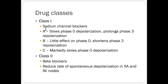Class 1A and 1C are slowing phase zero depolarization. 1A is prolonging phase 3 repolarization. 1B is shortening phase 3 repolarization, and 1C doesn't have any effect on phase 3. 1B has very little effect on phase 0. The point is they're all sodium channel blockers. For test purposes, I don't require you to know all of this — it's for your information only.